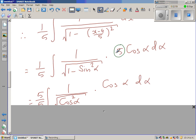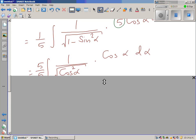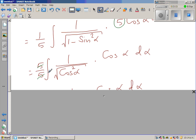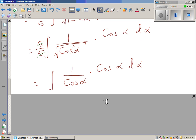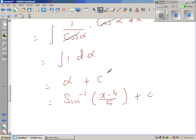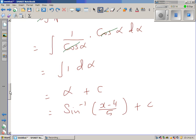This 5 factors out, which is 5 over 5, which gets cancelled. And the square root of cos squared is cos. So this cos alpha and cos alpha gets cancelled. And so that is nothing but integration of 1 d alpha.